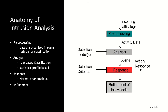The anatomy of intrusion analysis looks like this: incoming traffic is first pre-processed, then the pre-processed data goes for analysis using detection models. Based on that, it is classified, the system is alerted, and a response is taken based on decision criteria. Finally, the responses are recorded for refinement of the models.